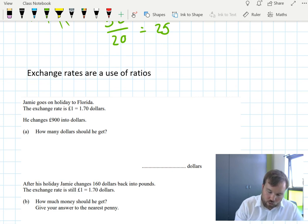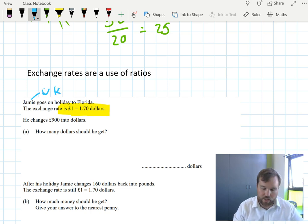Secondly, exchange rates. You'll almost always see exchange rates expressed like this: 1 to something. In this particular example, Jamie, who's from the UK, is going on holiday to Florida. The exchange rate is 1 pound to 1.70. 1 pound will buy you 1.70. If he wants to change 900 pounds into dollars, what should he do? Now, rather than memorizing a process here, I think it's easier to understand the ratio and then figure out what to do from the ratio.